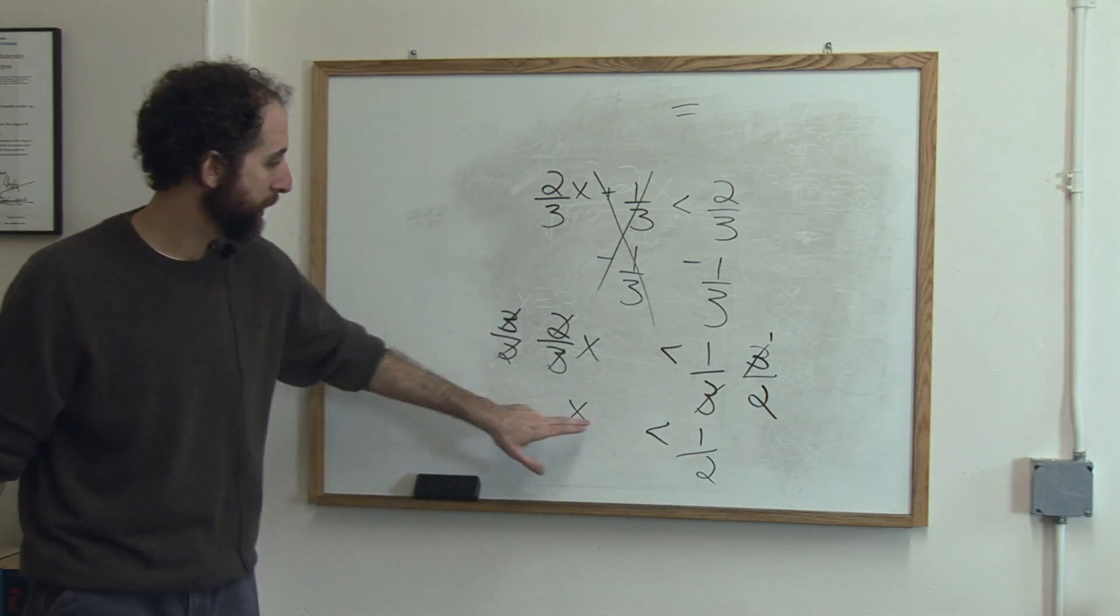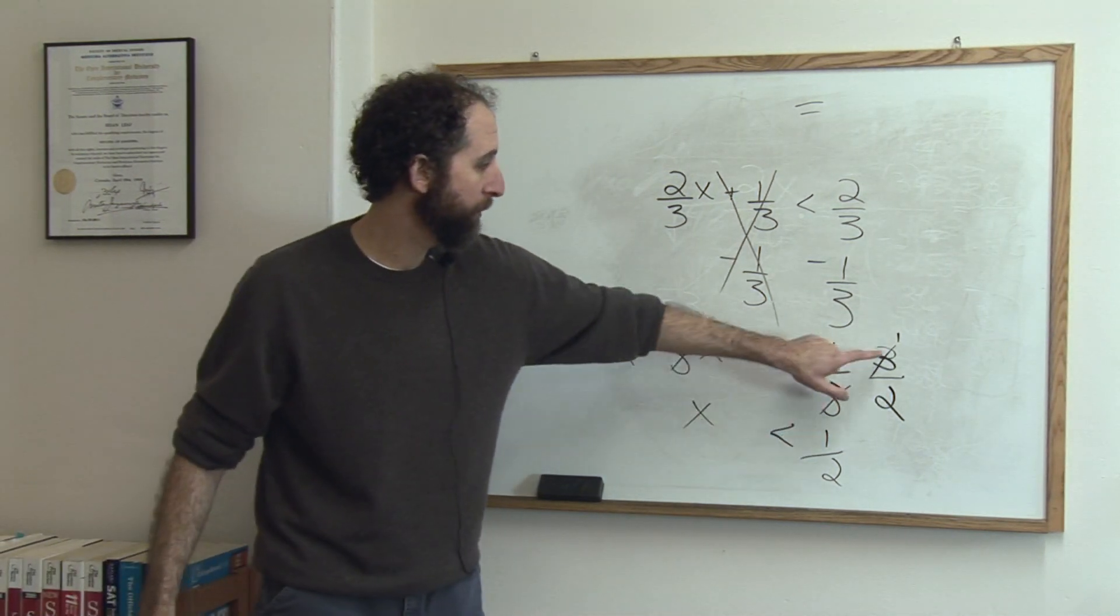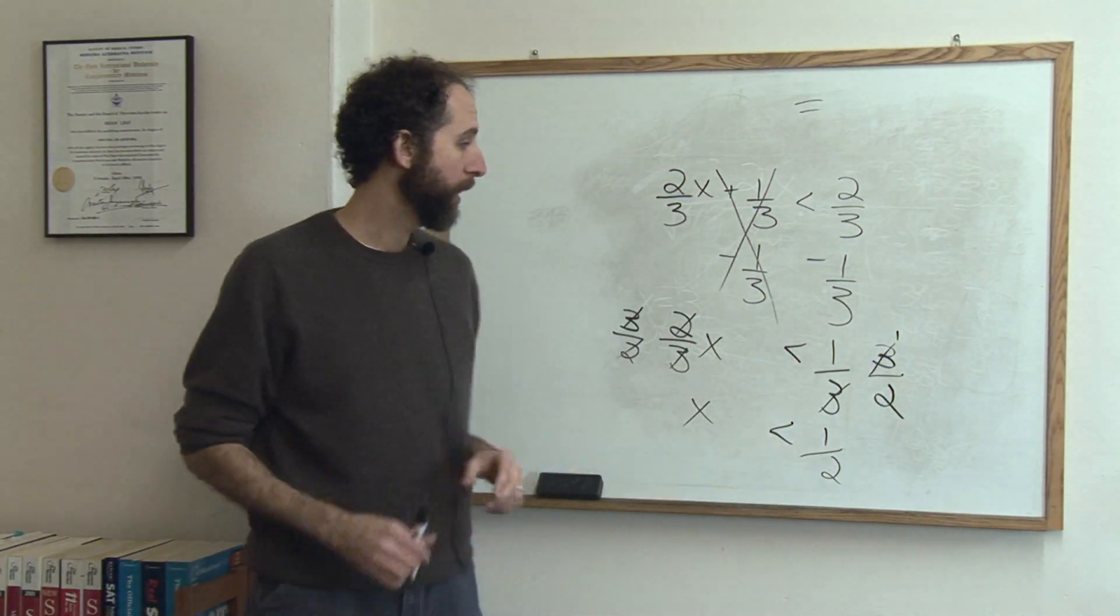So final answer, x is less than 1 half. If we hadn't cross canceled, we would have had 3 over 6, which would reduce to 1 half anyway.